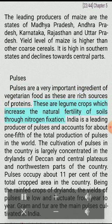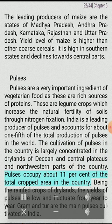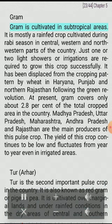Pulses are a very important ingredient of vegetarian food as these are rich sources of proteins. These are legume crops which increase the natural fertility of soils through nitrogen fixation. India is a leading producer of pulses and accounts for about one-fifth of total production of pulses in the world. The cultivation of pulses is largely concentrated in the drylands of Deccan and central plateaus and northwestern parts of the country. Pulses occupy about 11% of total cropped area. Being rainfed crops of drylands, the yields of pulses are low and fluctuate from year to year. Gram and Tur are the main pulses cultivated in India.